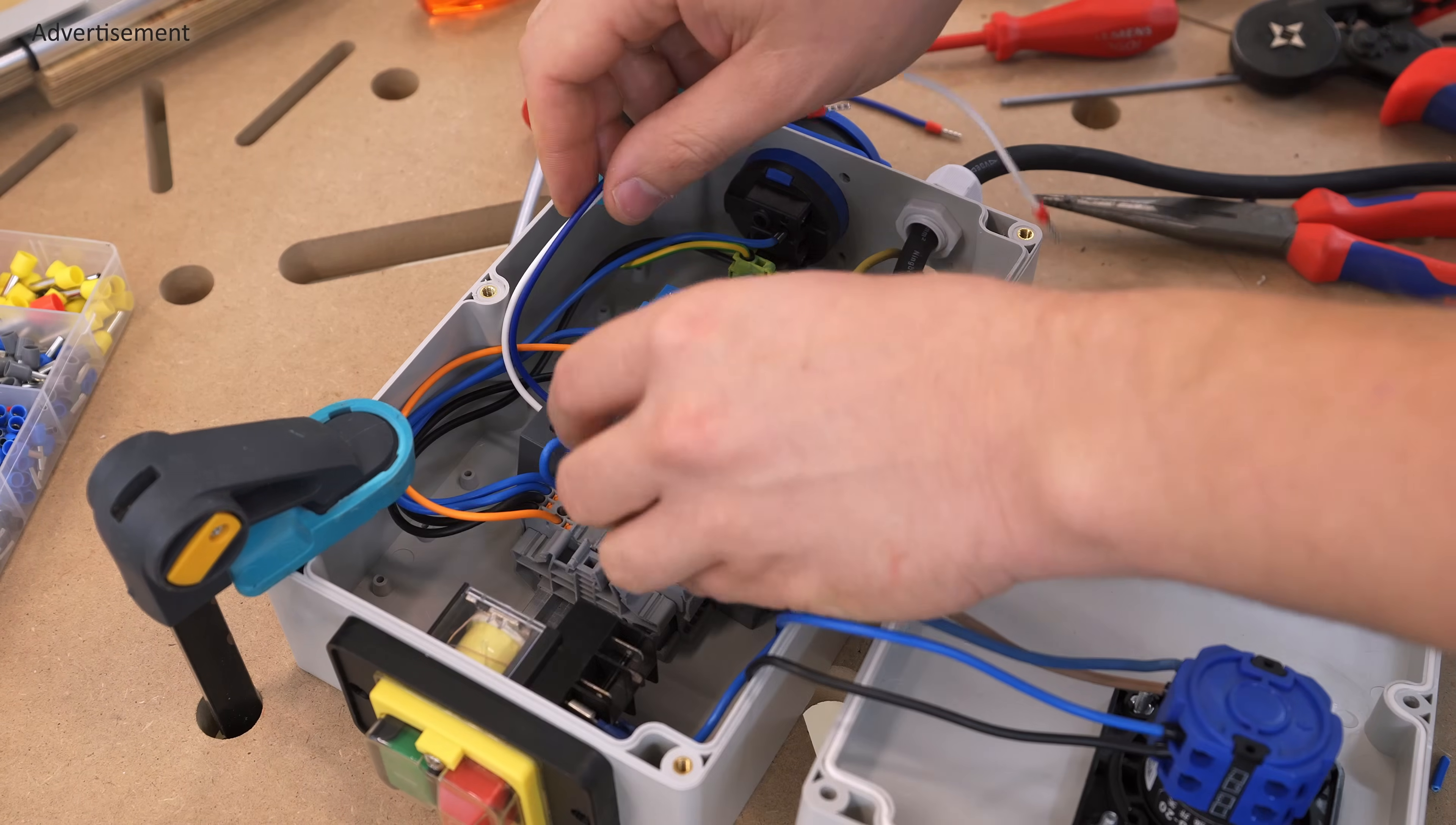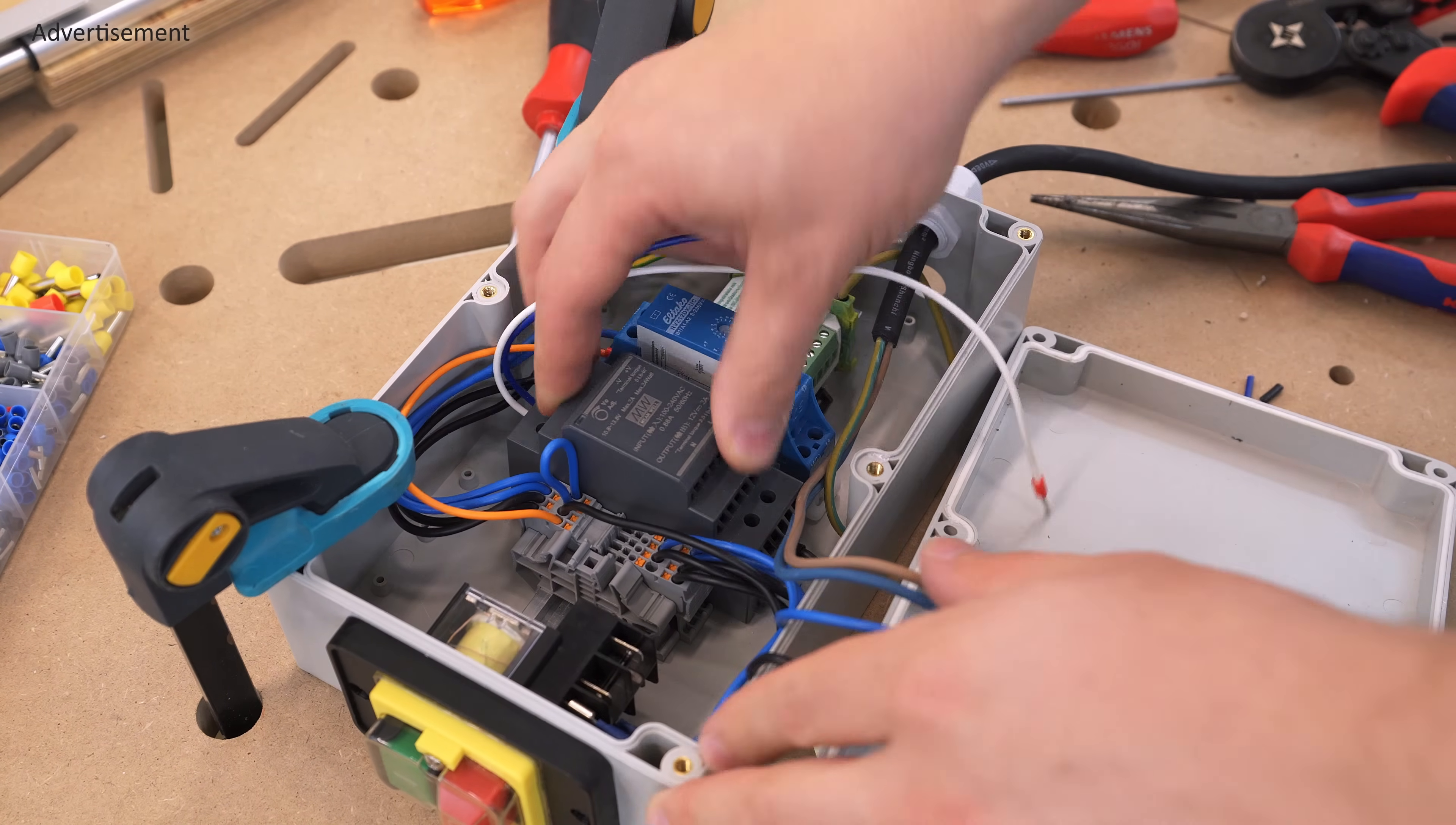And now the DC circuit, which powers the reverse polarity relay and the actuator.